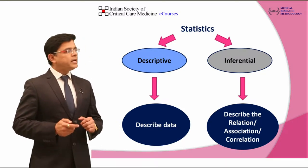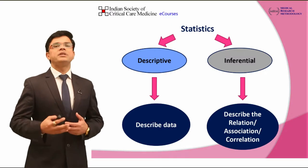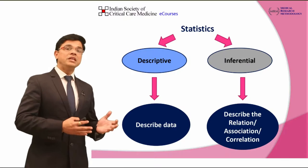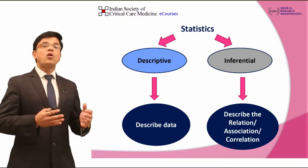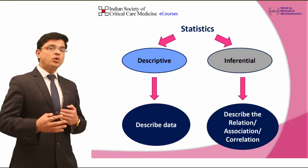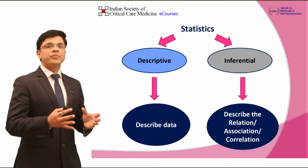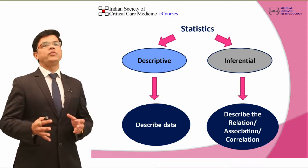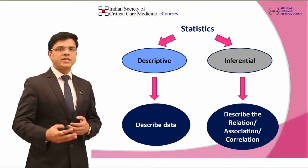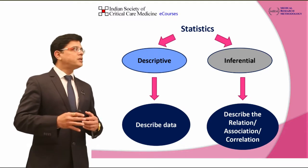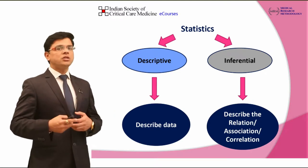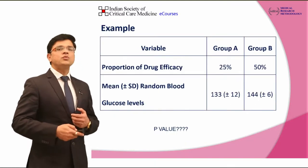In descriptive statistics, it only describes data in terms of frequency, proportion, percentage, mean with standard deviation, median with interquartile range, etc. Inferential statistics helps us to describe or to develop a relationship, association, or correlation between two variables. So if we want to reach some inference, we need inferential statistics, and common statistical tests come under inferential statistics whenever we want to develop any association or correlation.